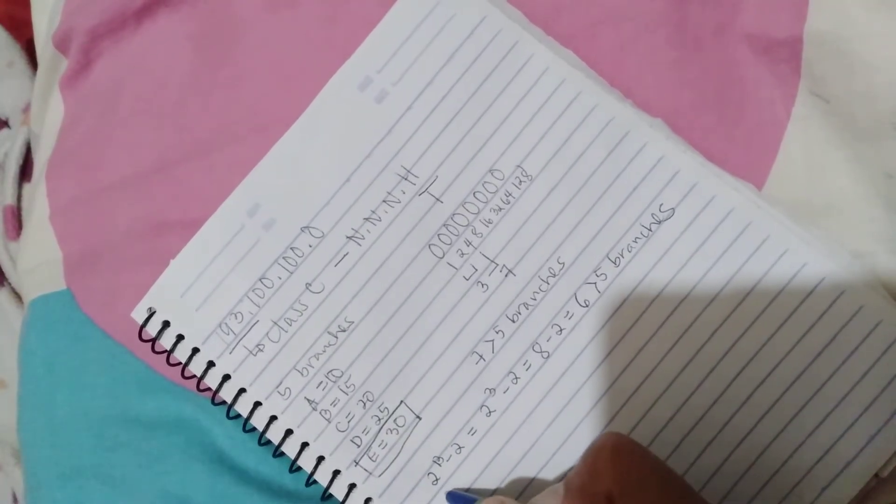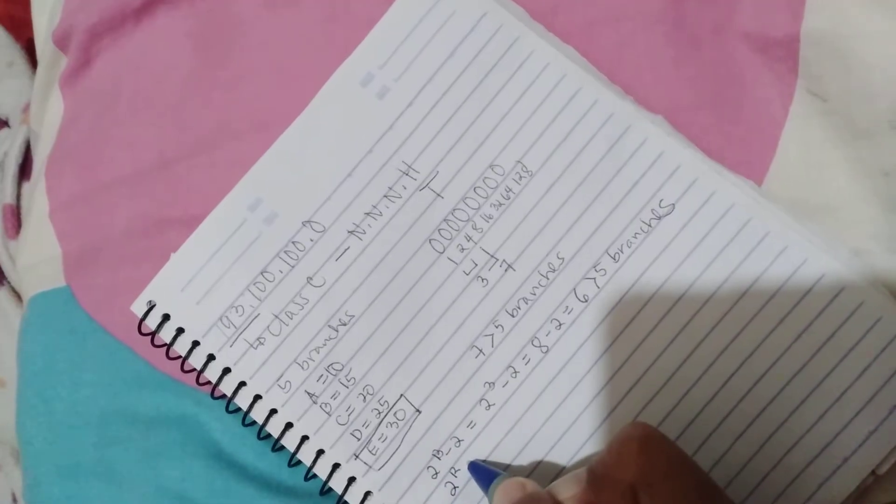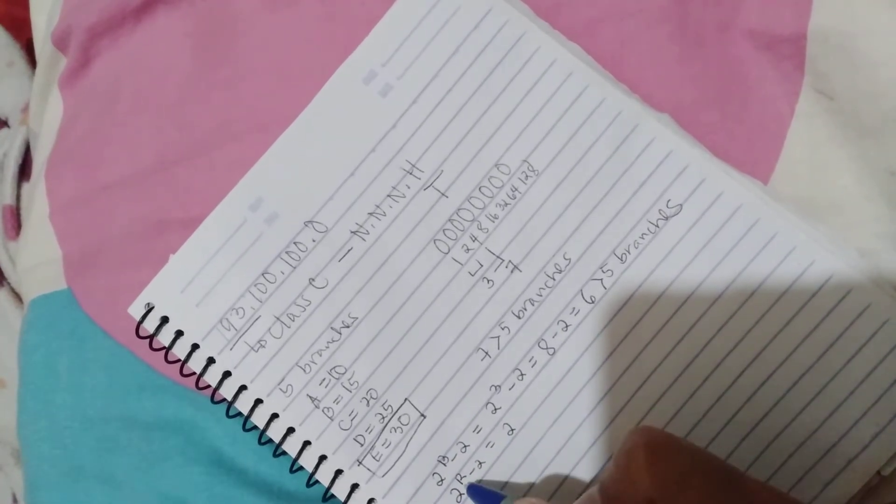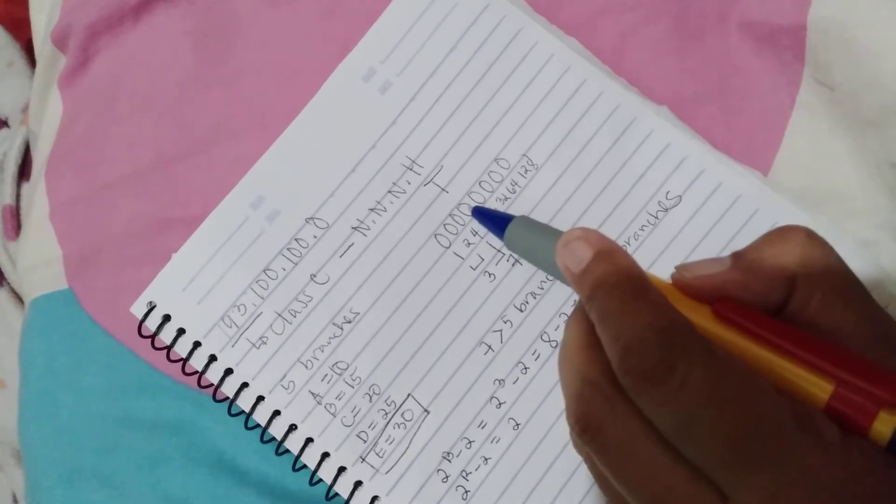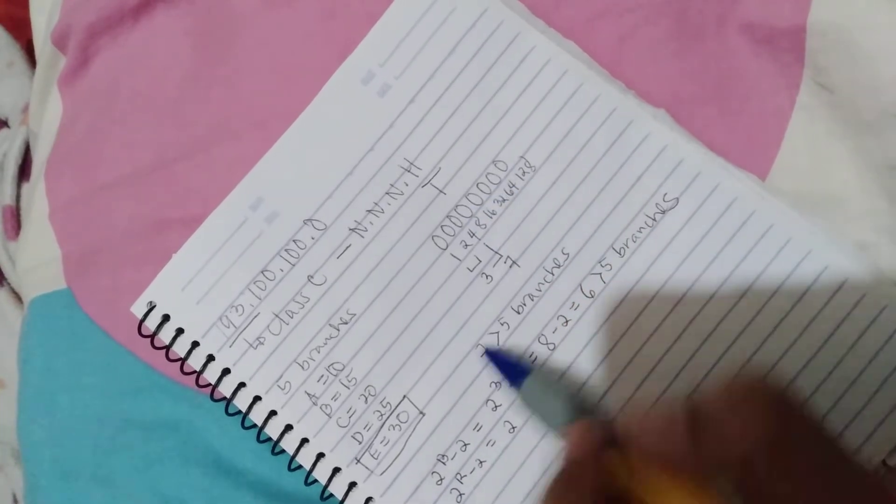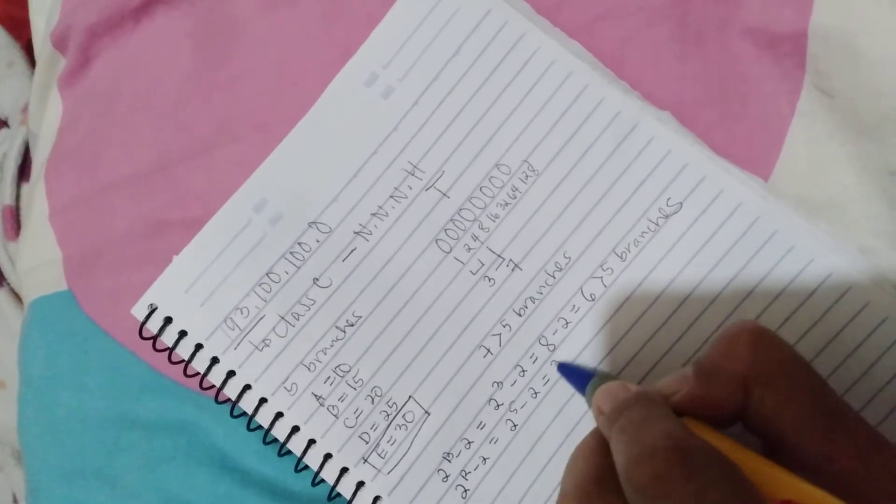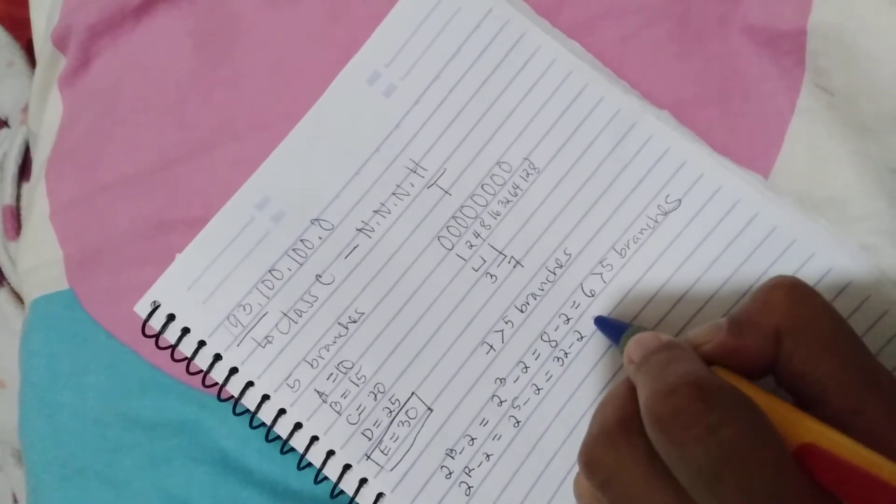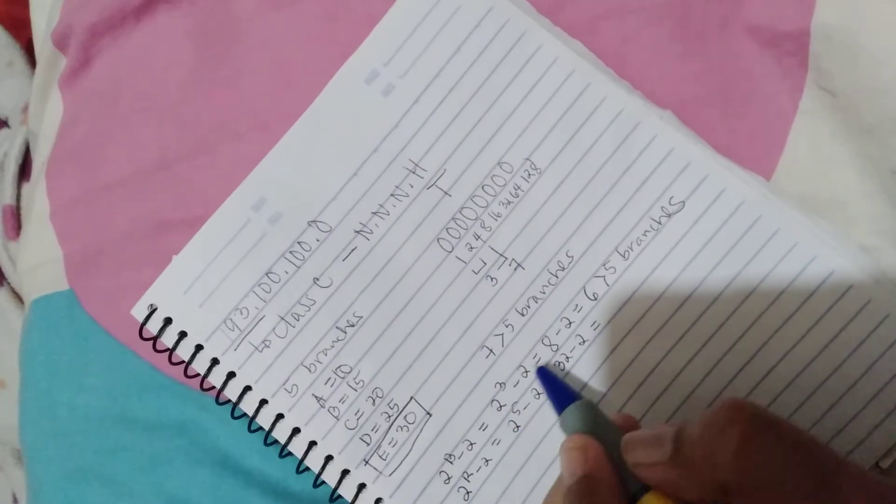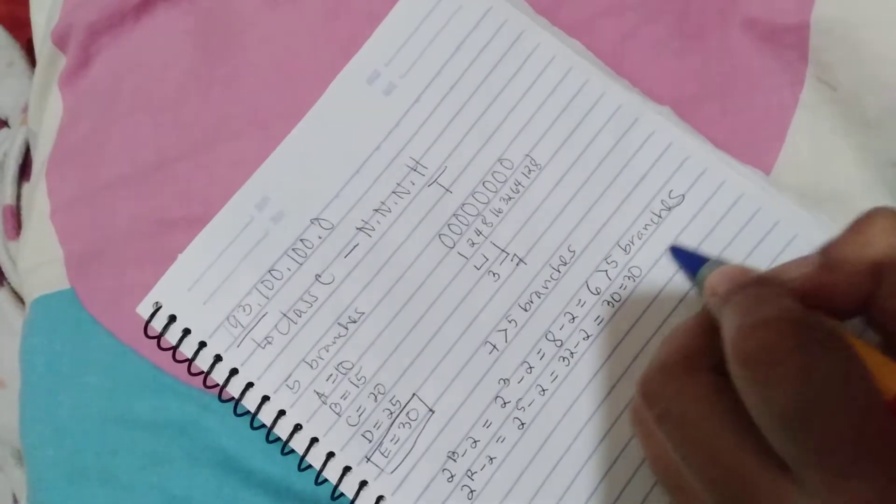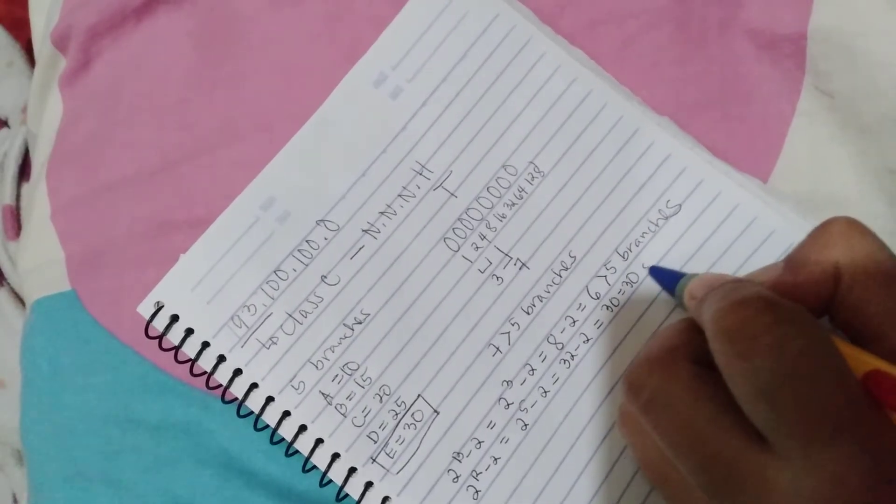Another formula: 2 raised to R minus 2 equals. R means remaining bits, so we have 1, 2, 3, 4, 5 remaining bits. 2 raised to 5 minus 2, that is 32 minus 2 is equal to 30, and 30 is equal to 30 computers.